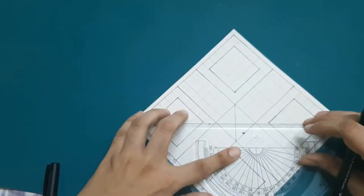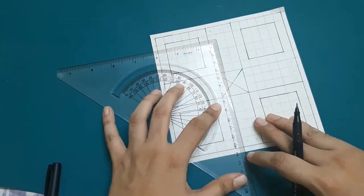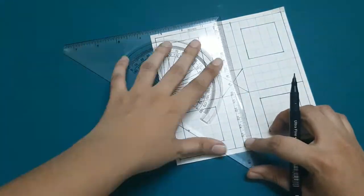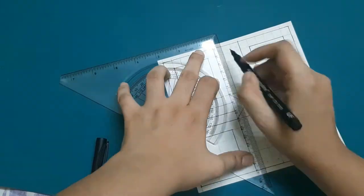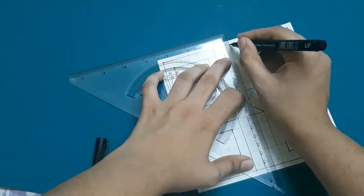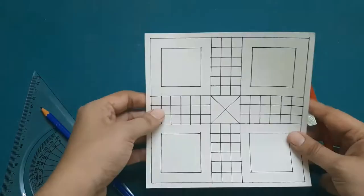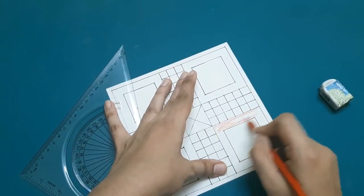And in the center, I will rub the pencil marking and create a cross. Now, using the pencil markings, I am going to draw the tiny squares. That completes my board.